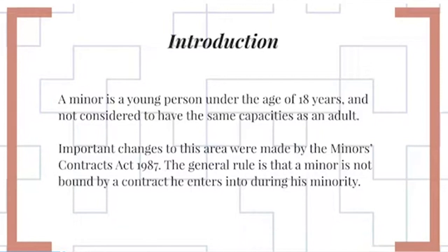Important changes to this area of the law were made by the Minors Contracts Act of 1987. The general rule is that a minor is not bound by a contract he enters into during his minority. The purpose of this rule is to protect minors against their own inexperience and improvidence by relieving them of liability on contracts made by them, but in some cases the rights of the other parties must in fairness be allowed to prevail over this policy of protection.